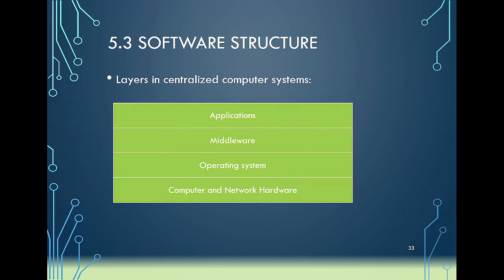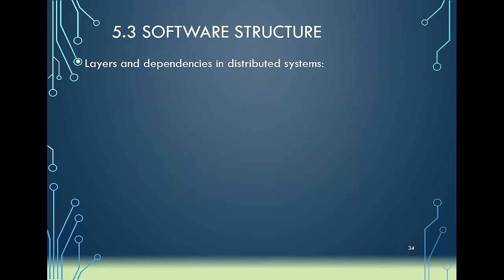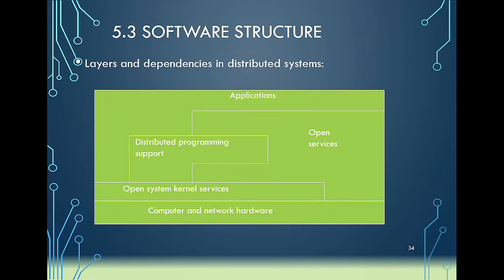Regarding software structure, when you understand how the computer works — from typing in a word document to sharing it via email — we need hardware in place. The operating system manages the various hardware resources. Between the application and the operating system, we have middleware. A distributed system has middleware that provides an abstraction layer so that when you're using a web browser or accessing a webpage, you don't need to know the underlying hardware and software operations. The kernel represents how the operating system functions, and of course there is the computer hardware and network.